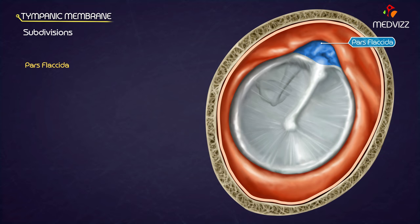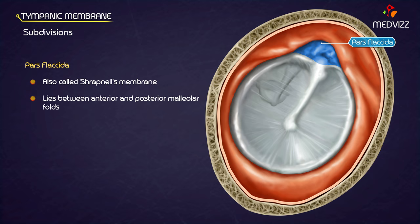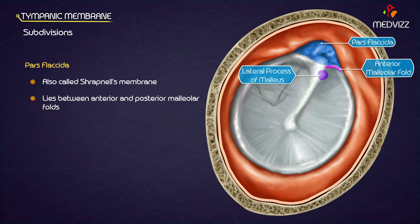Pars flaccida, also known as Shrapnell's membrane, is a small triangular region above the lateral process of the malleus between the anterior and posterior malleolar folds. This part is thin, lax, and appears pink in color.